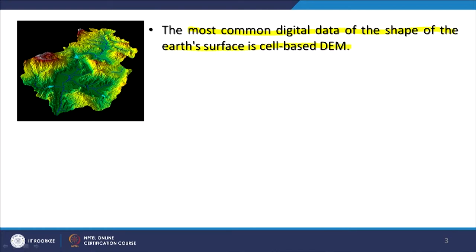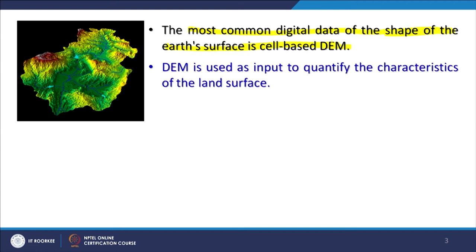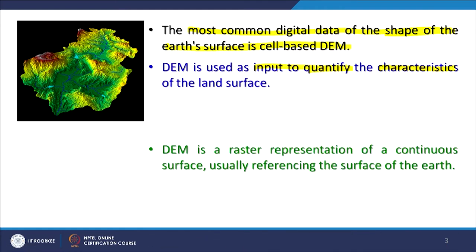DEM is the most common digital data of the shape of the earth's surface, specifically the cell-based or raster form. DEM is used as input to quantify the characteristics of the land surface. Those characteristics include slope, aspect, gradients, drainage network, watershed boundary, and many others. The purpose is to quantify these characteristics because it is a digital elevation model, so the analysis we do is quantitative, not qualitative.